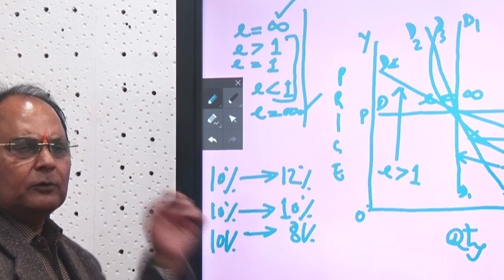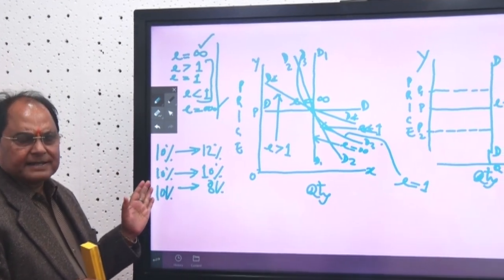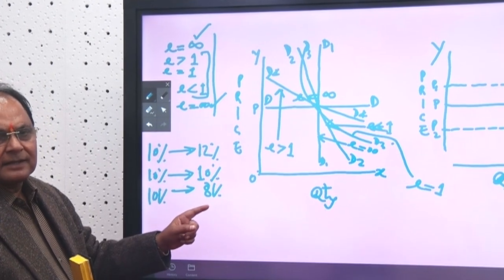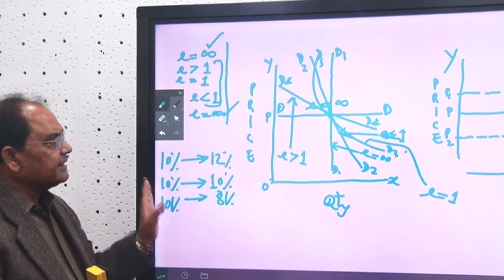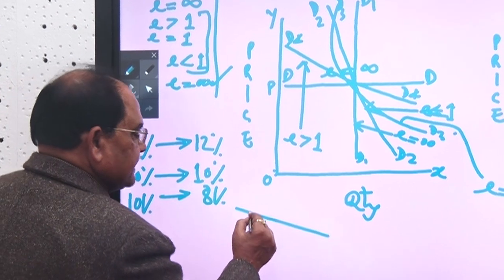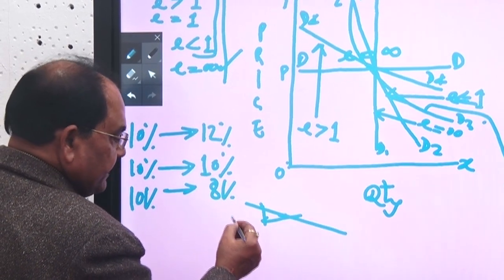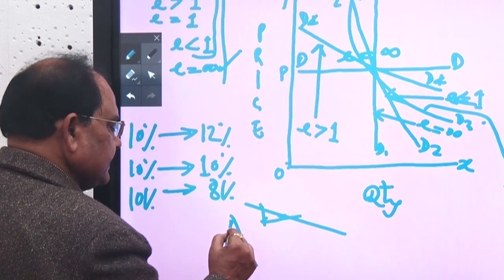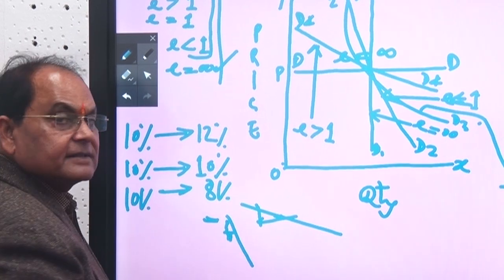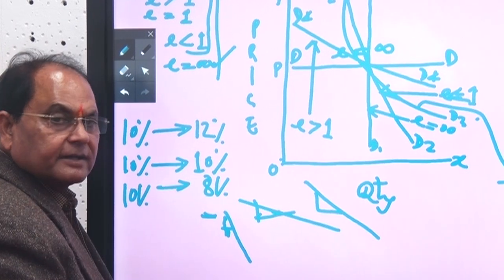When elasticities in two markets are different, price discrimination can be a favorable exercise; if they are not different, it may not be profitable. A flatter demand curve shows E greater than 1 — a small fall in price leads to a large increase in quantity. A steeper curve shows E less than 1 — a large fall in price results in only a small increase in quantity. A 45-degree line shows E equals 1.